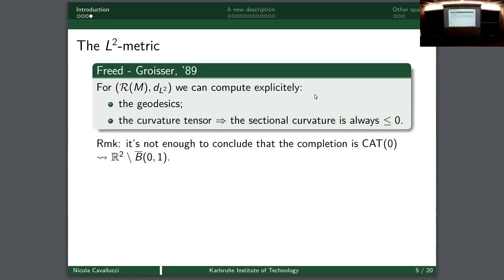Even though you have a metric on an infinite-dimensional manifold, you can define the geodesic equation and the curvature - you can do computations - and Freed and Groisser did this in 1989. You can compute the geodesics explicitly for this infinite-dimensional manifold, and you can compute the curvature tensor. It turns out that the sectional curvature is always less than or equal to zero.